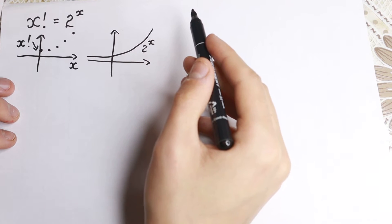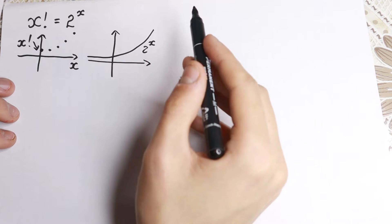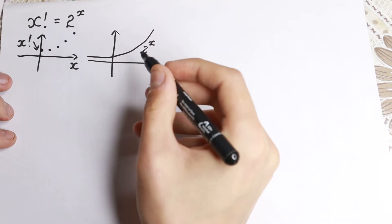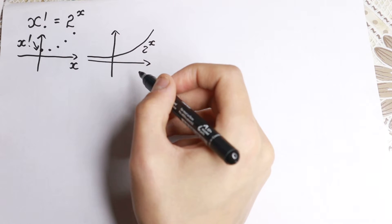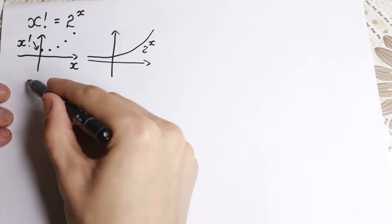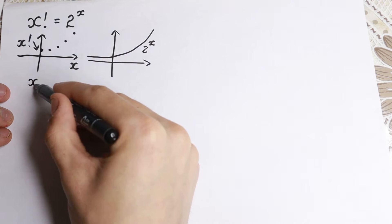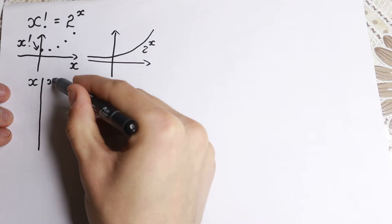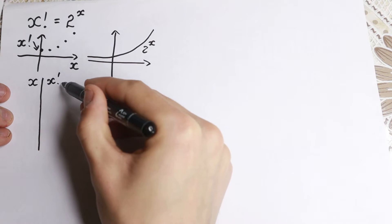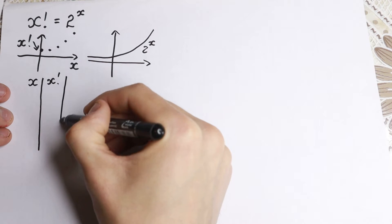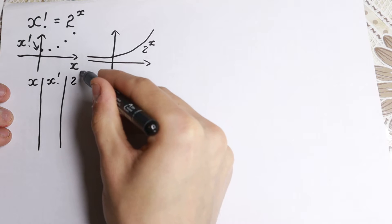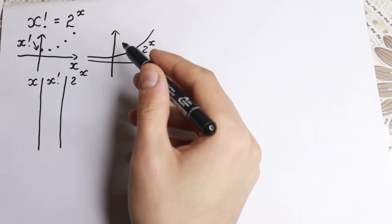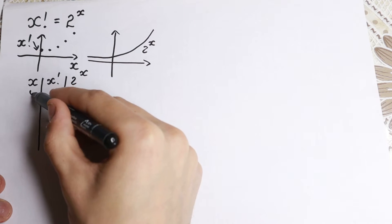Right now I'm going to show you information about how fast this function grows compared to the other. Let's draw a table with x, x factorial, and 2 to the x, and find information about it — let's go up to x equals 6.